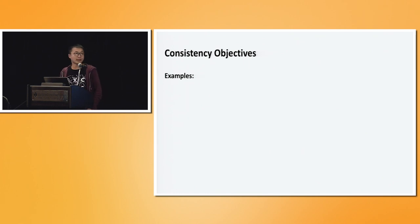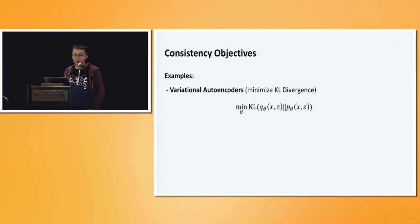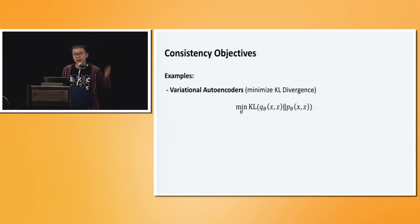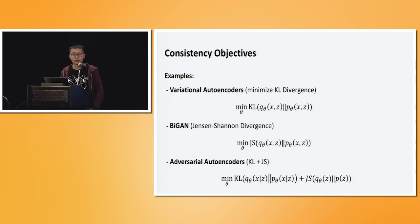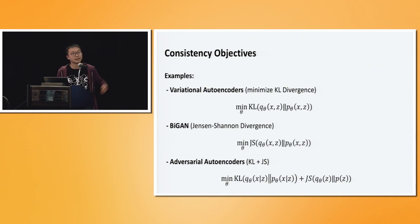To connect this back to what we are familiar with: variational autoencoders, which most of you probably know from ELBO, are actually equivalent to minimizing the KL divergence between these two joints. Also, BiGAN directly uses an adversarial critic to minimize the Jensen-Shannon divergence. And adversarial autoencoders minimize the sum of two divergences — one is KL over the conditional distribution, and the other is Jensen-Shannon over the marginal.